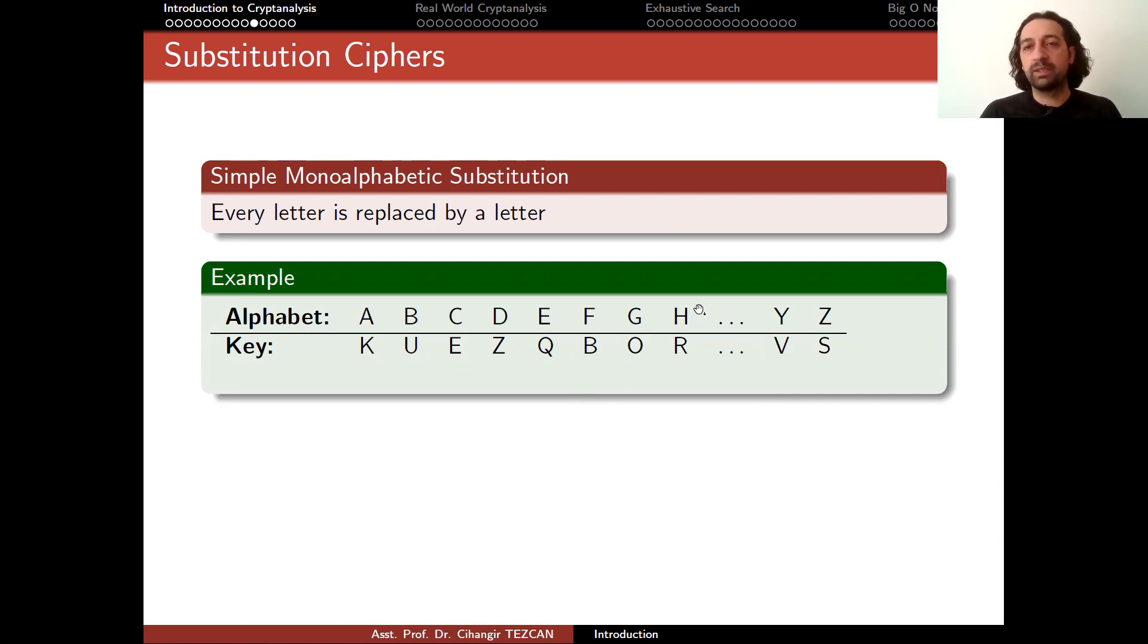Just write the alphabet down. In this case, again, we are using English alphabet, but rewrite the alphabet again, but this time in an order that you prefer. So it can be random or it is better if it's random. So you write the same alphabet, but in a different order. So you permute the letters and this will be your secret key.